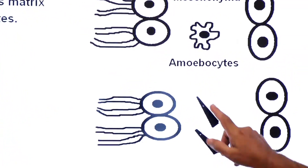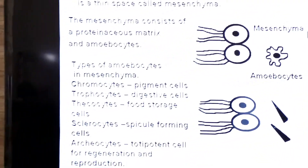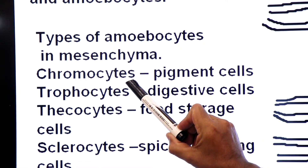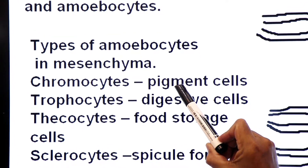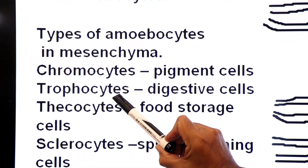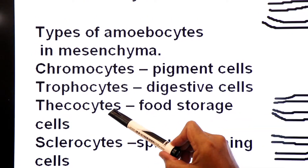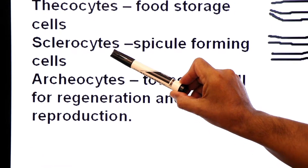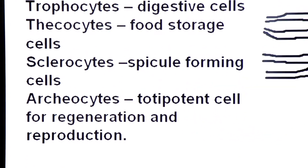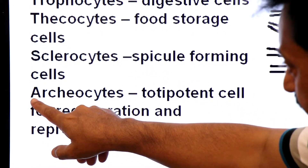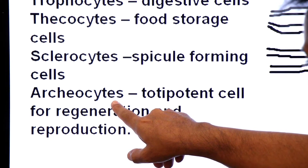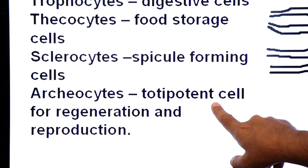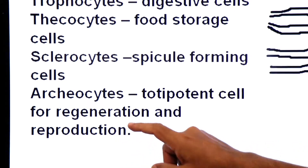Types of amoebocytes in the mesenchyme of sponges: chromocytes have granules of pigment and are pigmented cells; trophocytes are digestive cells; thesocytes are food storage cells; sclerocytes form spicules, which are the endoskeleton of sponges; and archaeocytes are totipotent cells — a cell having the ability to form all cells of the body — used for regeneration and reproduction.